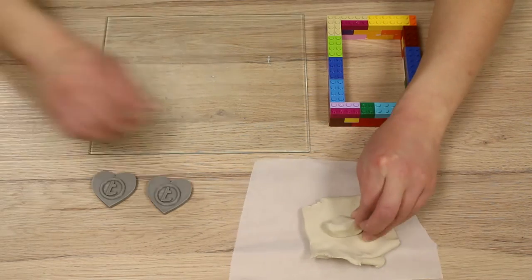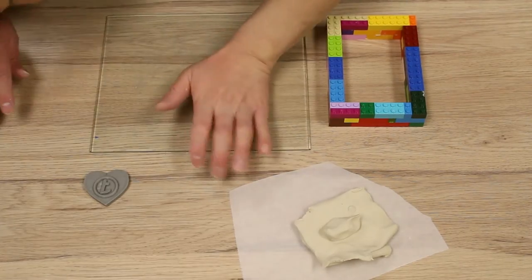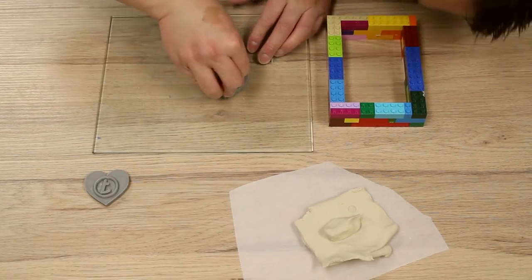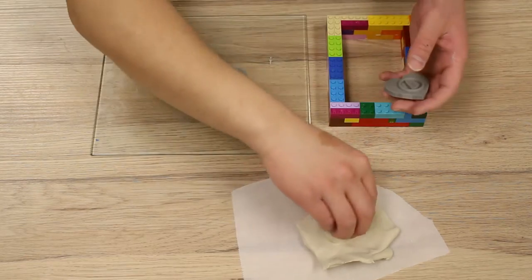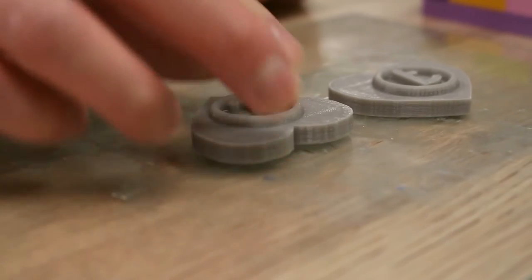We already made our Lego rectangle and 3D printed our model for the mold. First we have to use some clay to prevent the model from moving when we pour the silicone in. So we will put a little bit of clay on the back and place it onto a glass.